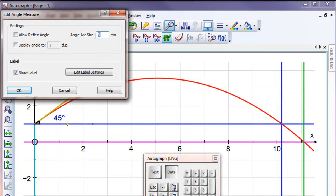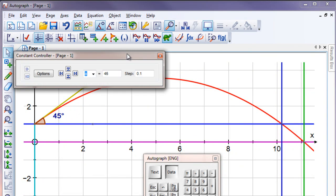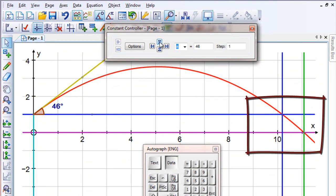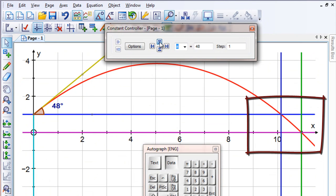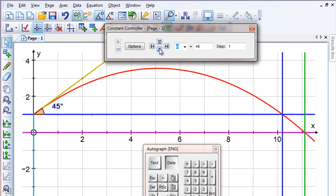I'll just make it a little bit bigger. Now we'll get the constant controller out. This parametric equation is full of constants, all of which can be varied using this nifty controller here. So I'm going to change the step to one, so I can now change the angle in steps of one degree. And you can see that at 45 degrees, it's certainly the maximum on the horizontal distance.